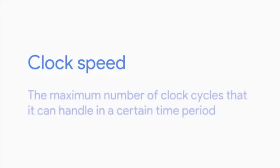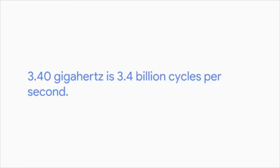If you have lots of data you need to process in a command, you'll need to run lots of clock cycles. Have you ever seen a CPU in the store labeled 3.4GHz? This number refers to the clock speed of the CPU — the maximum number of clock cycles it can handle in a certain time period. 3.40GHz is 3.4 billion cycles per second. That's super fast. But just because it can run at this speed doesn't mean it does — it just means it can't exceed this number.